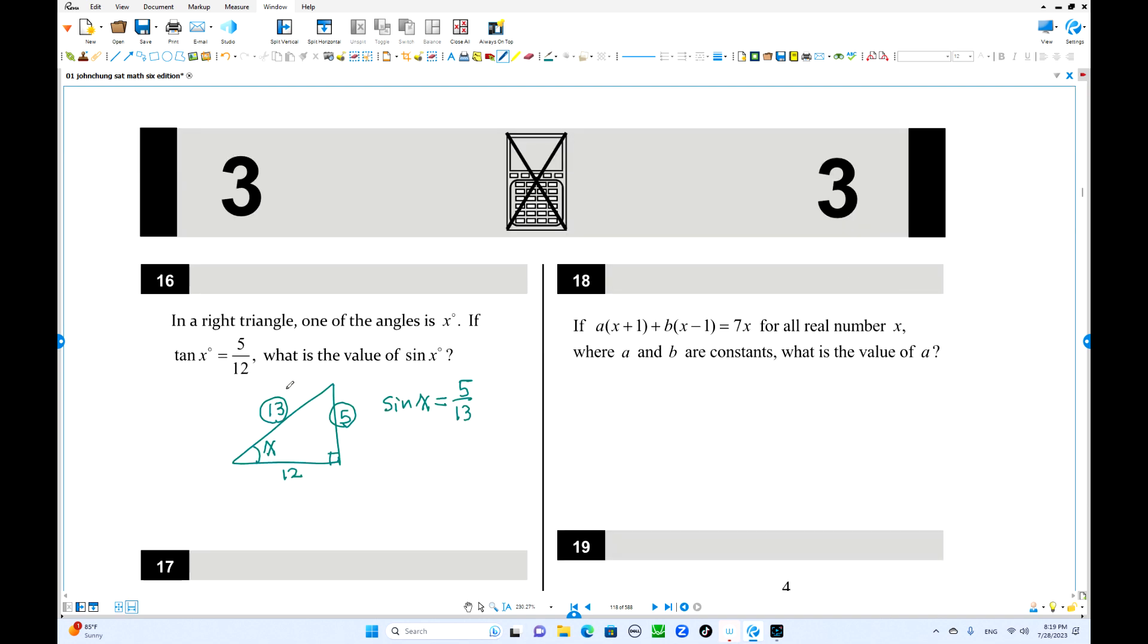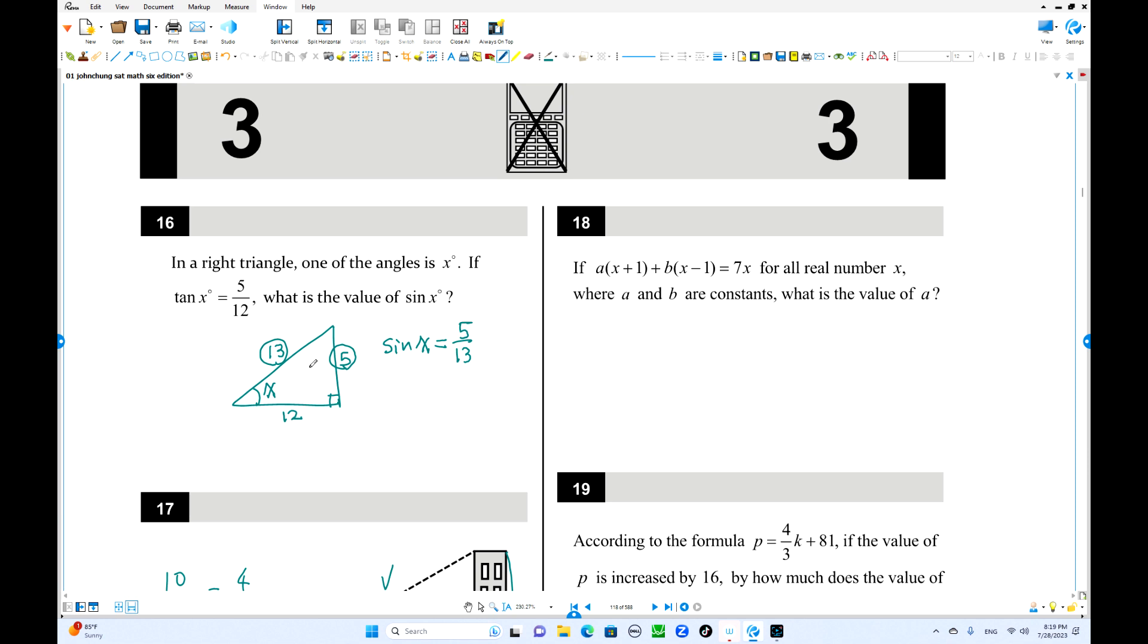Number 18. A times x plus 1 and b times x minus 1 equals 7x for all real x value of x. All numbers x. So a and b are constant. What is the value of a? That is equal to 7x. But where is the constant? Constant is 0. Because they are always equal for any value of x. Must be same expressions. Coefficient of x must be 7. So a plus b equals 7. Constant also equals 0. A minus b equals 0. You can use the addition. 2a equals 7. The value of a equals 3.5 or 7 over 2.